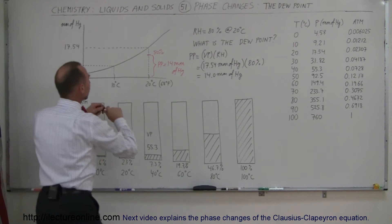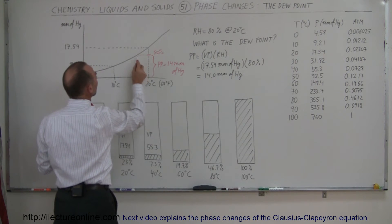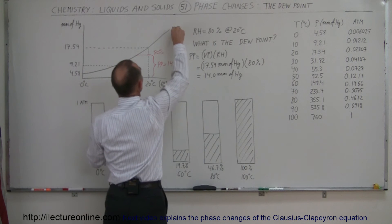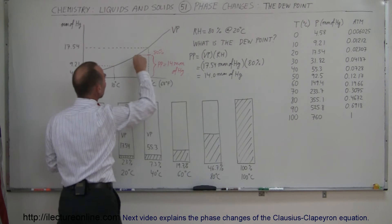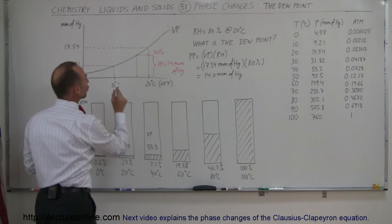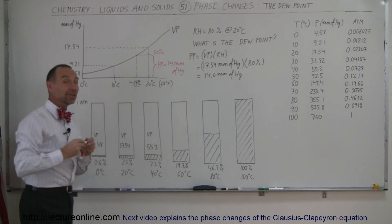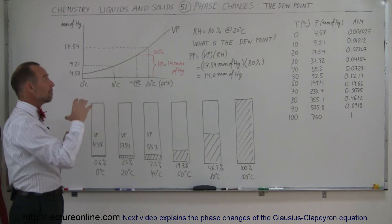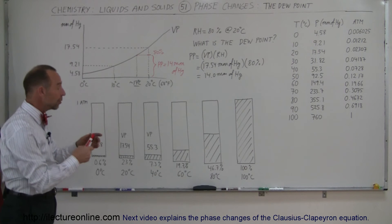Vapor pressure drops with temperature. So as the temperature decreases, you can see that this partial pressure becomes a larger and larger portion. Eventually the partial pressure will be equal to the vapor pressure — because the black line here represents the vapor pressure as a function of temperature, which increases with increasing temperature. So when it cools down sufficiently, at that point the partial pressure equals the vapor pressure, and that is called the dew point. In this case, it looks like it's about 17 degrees centigrade — at about 17 degrees centigrade the air is now fully saturated.